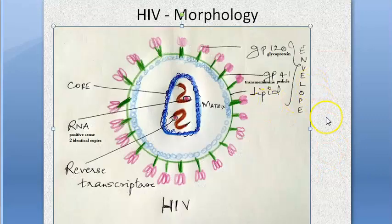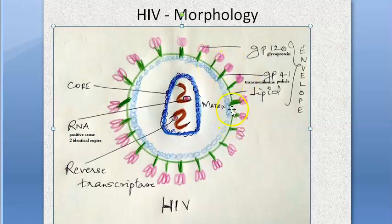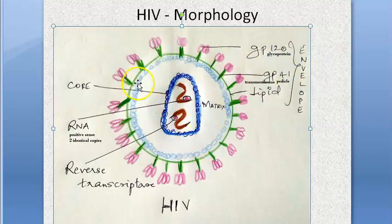Reviewing HIV morphology: GP120 and GP41 are glycoproteins attached to the lipid envelope. GP41 is the transmembrane pedicle, also called the fusion protein, and GP120 helps in binding to host CD4 cells. Inside the envelope is the matrix, and at the center are two identical copies of single-stranded RNA along with RNA polymerase, surrounded by the nucleocapsid core.